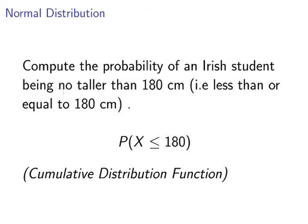Compute the probability of an Irish student being no taller than 180 centimetres. That is to say, less than or equal to 180 centimetres. This is actually known as the cumulative distribution function. X means the height. And be mindful of the direction of the operator there. It means less than or equal to.